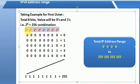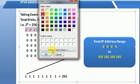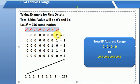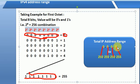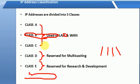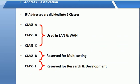Let's look at 2 to the power of 0 again. If all 8 bits are 0, the value is 0. If all 8 bits are 1, the value is 255. So the range of an octet goes from 0 to 255. This means each octet can hold any value from 0 to 255.